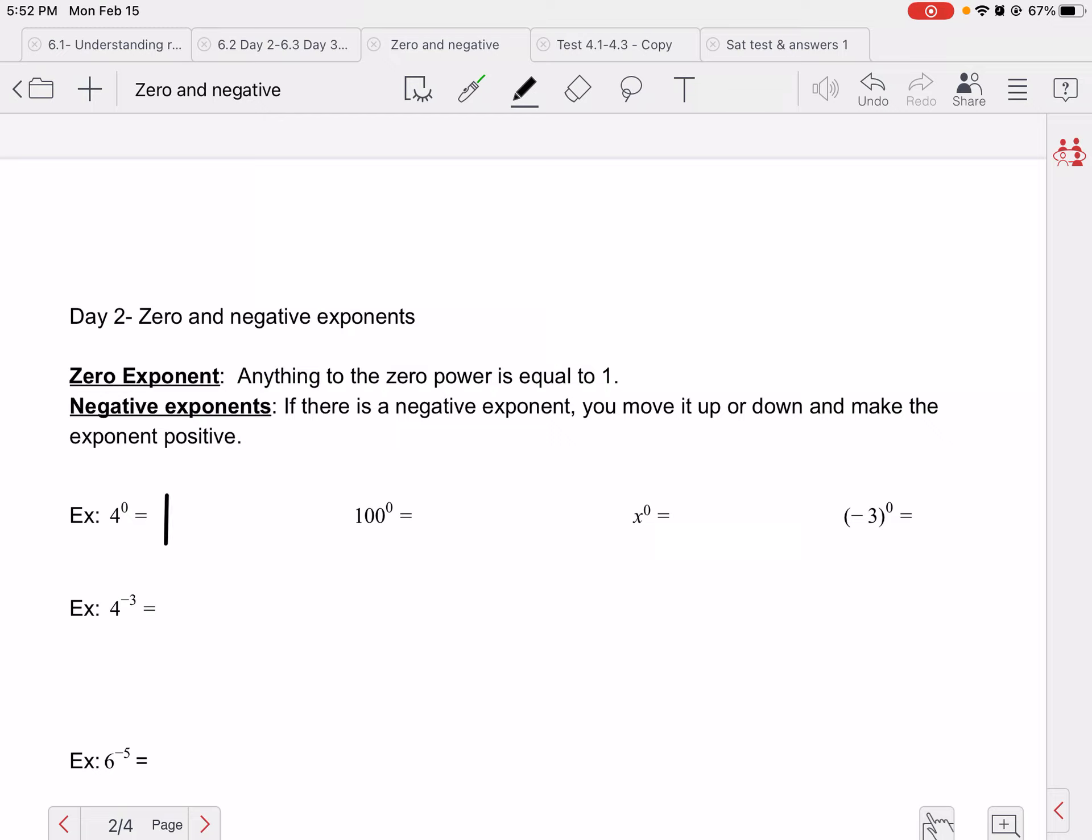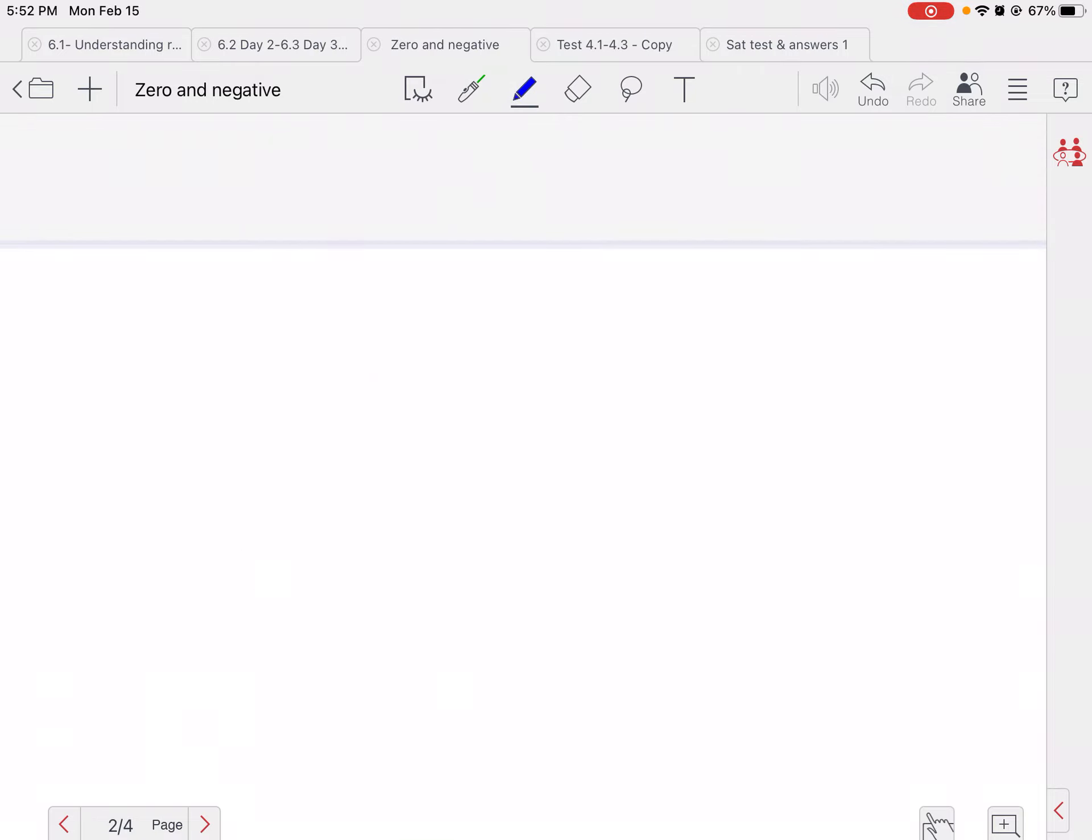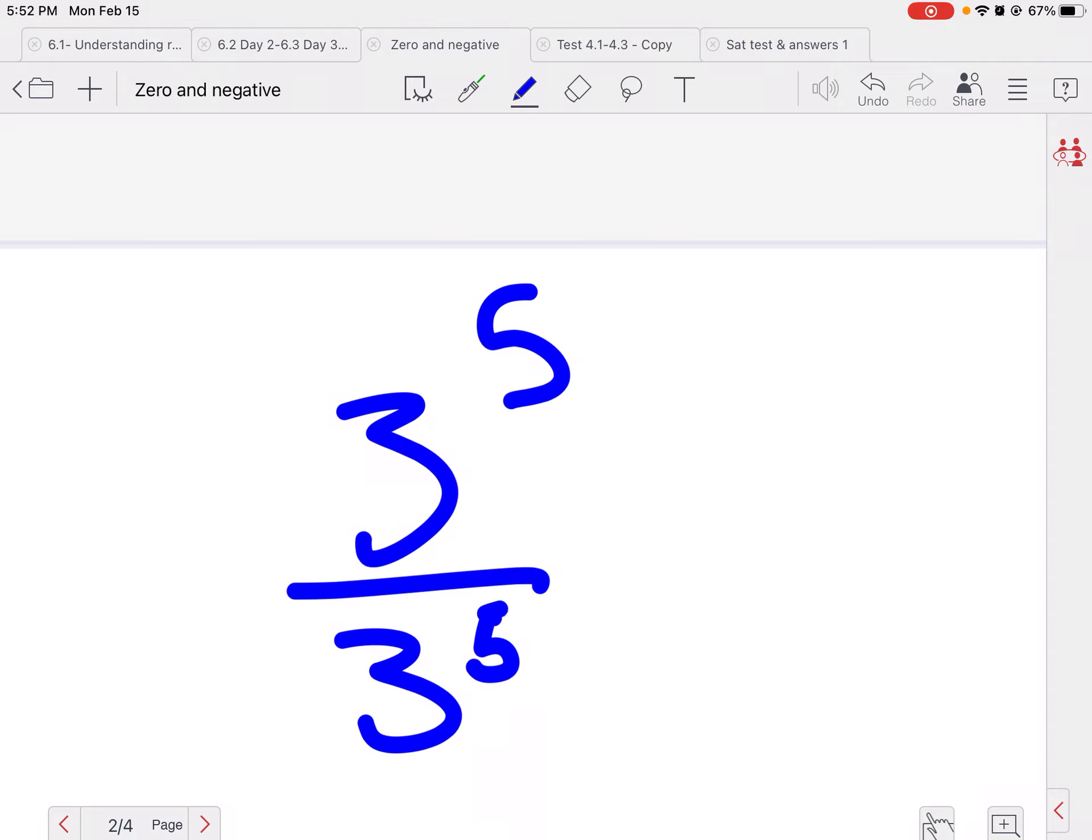We're going to talk about two new rules. We talked about product rule and quotient rule in our last video. And today we're going to talk about the zero exponent rule and what happens if we have negative exponents. The zero exponent rule is if anything is to the zero power equals one. So, 4 to the zero power is one, 100 to the zero power is one, x to the zero power is one, and negative 3 to the zero power is one.